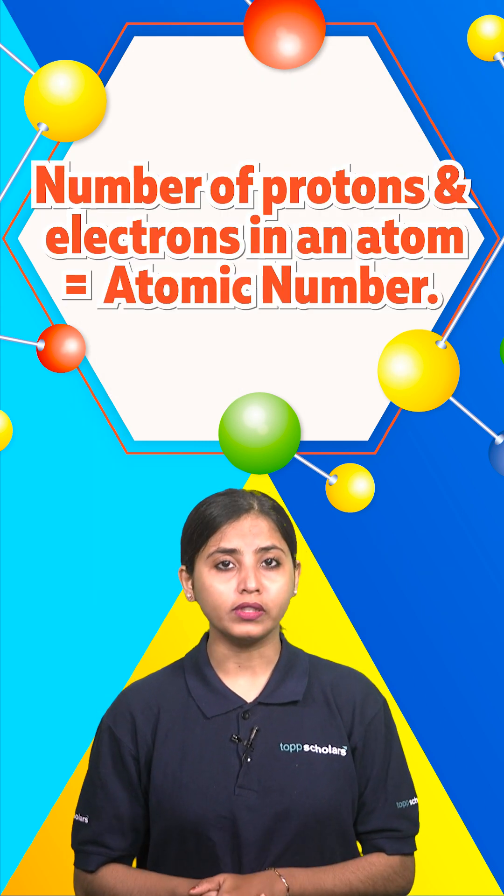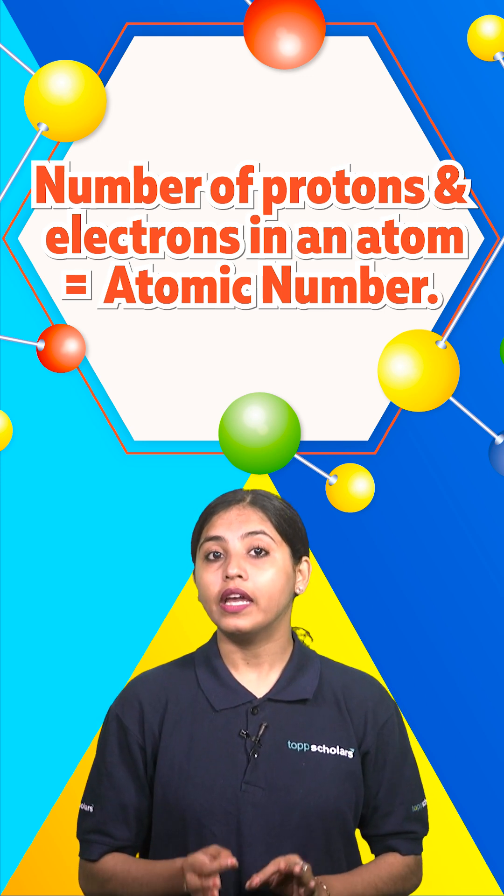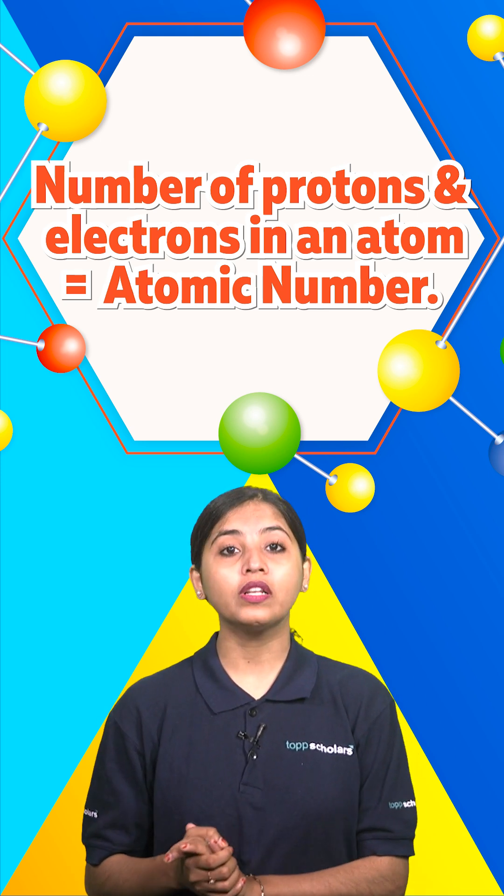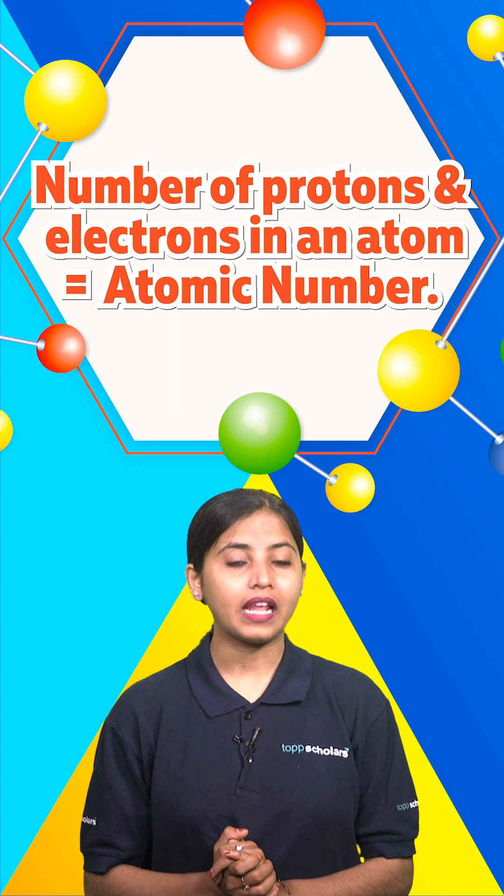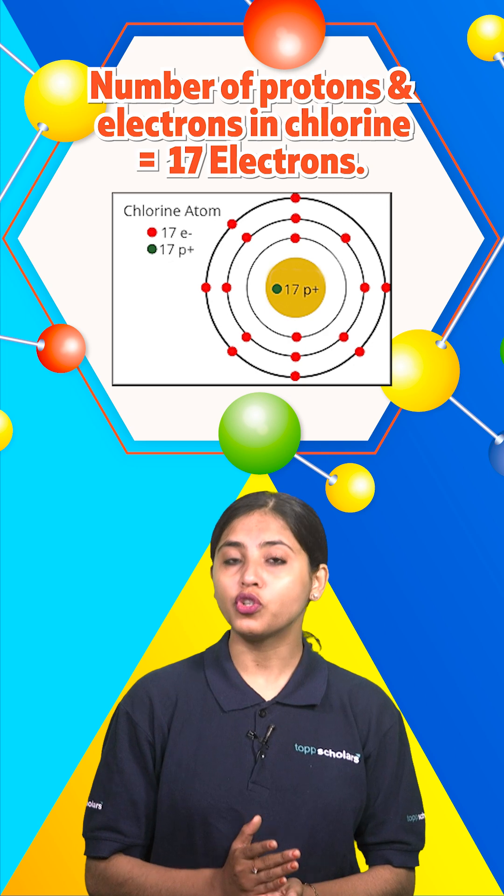Now a very important thing. The number of protons and electrons in an atom is equal to the atomic number. This means that chlorine has 17 electrons and protons.